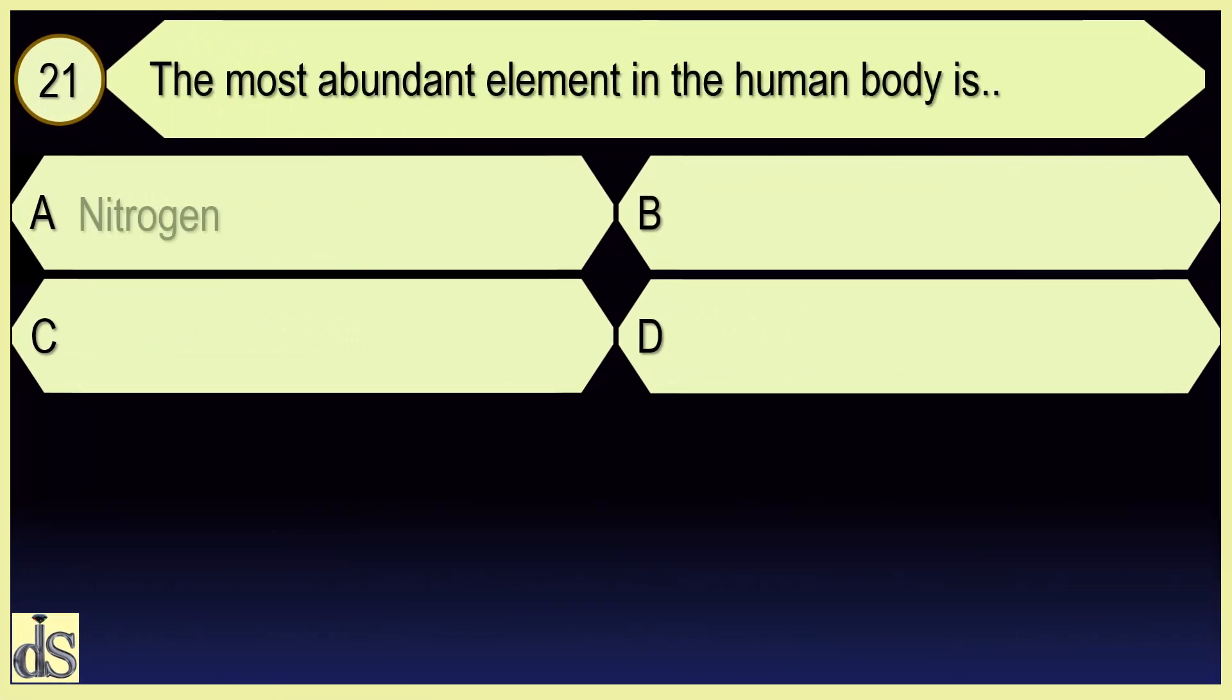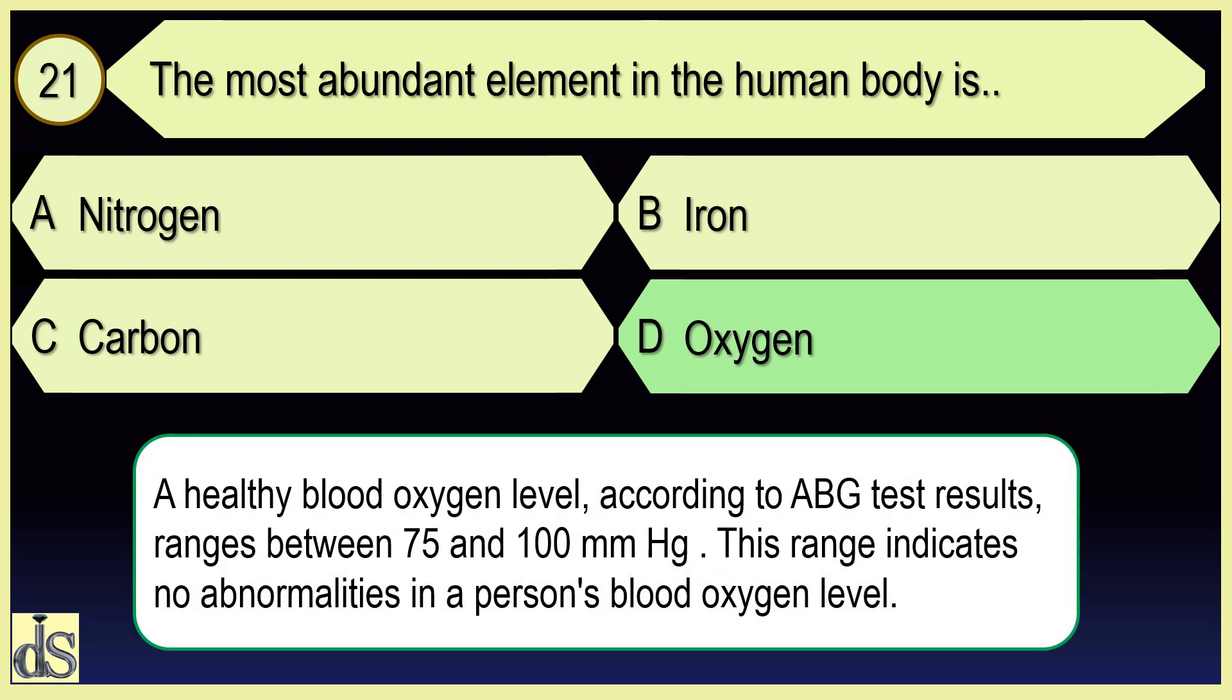The most abundant element in the human body is oxygen.